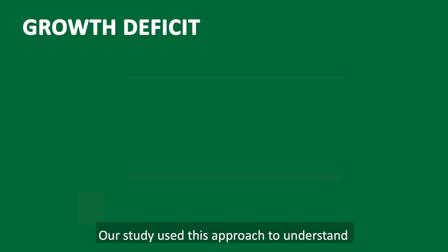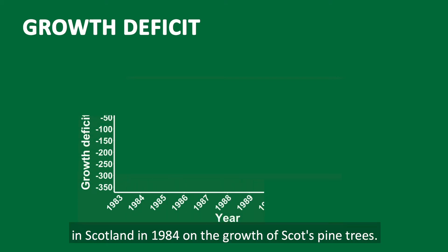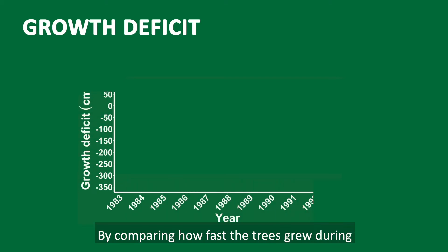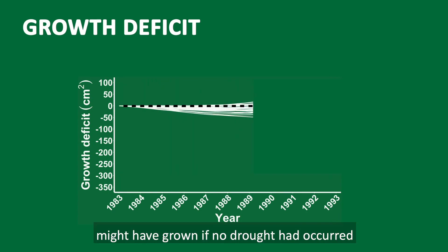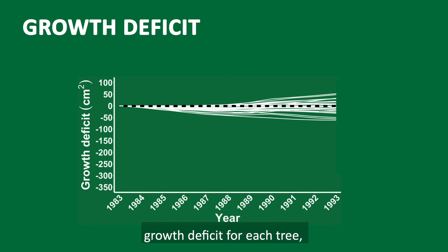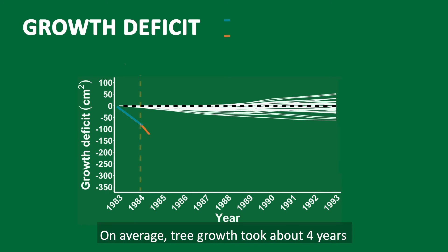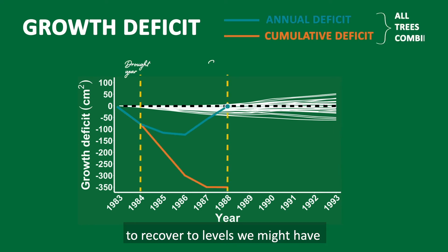Our study used this approach to understand the total impact of an extreme drought in Scotland in 1984 on the growth of Scots pine trees. By comparing how fast the trees grew during and after drought, and how fast they might have grown if no drought had occurred, we calculated both the annual and cumulative growth deficit for each tree, represented by the white lines. On average, tree growth took about four years to recover to levels we might have expected if no drought had occurred.